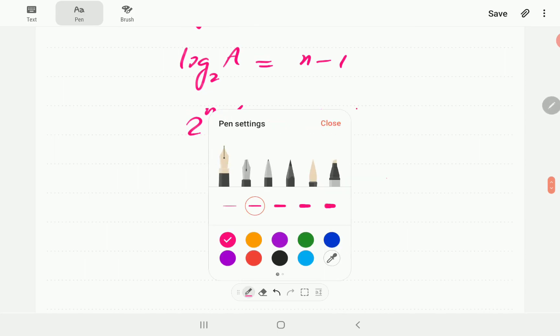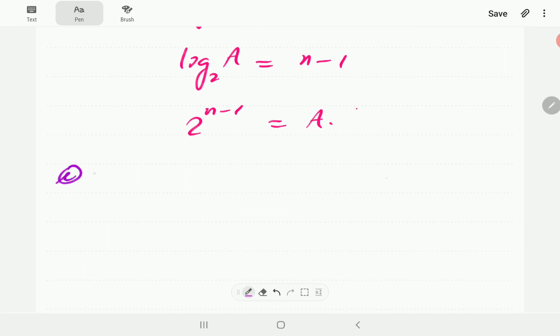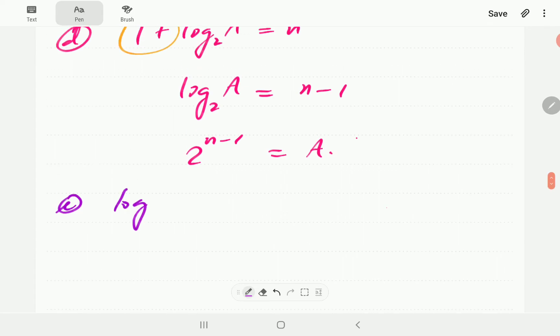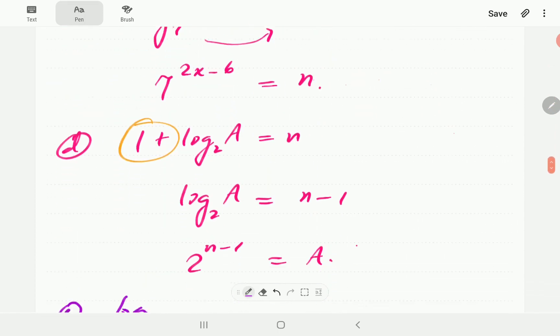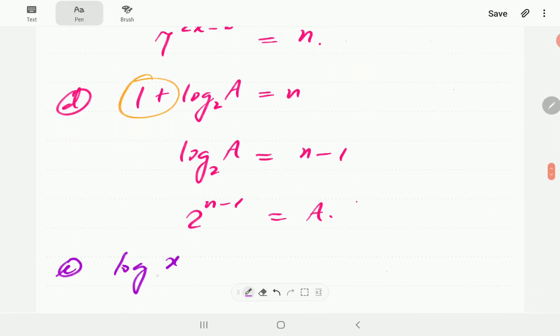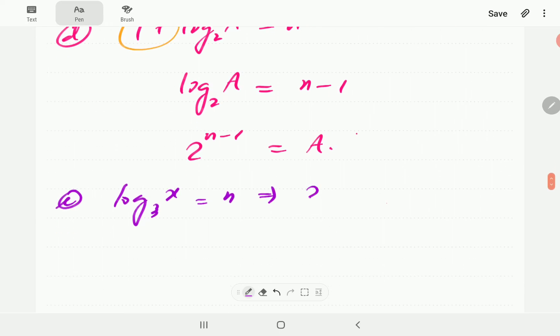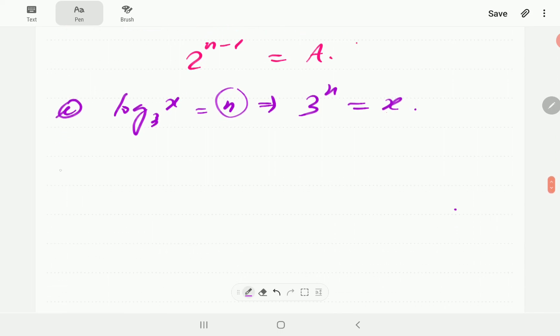In e, we have got log x base 3 is equal to n. The base is 3. The power or the exponent, we already say the log is equal to the exponent, is n. So, this must be equal to x.